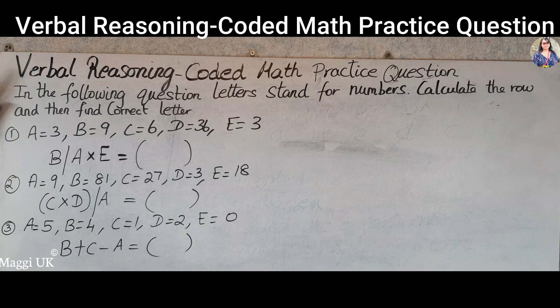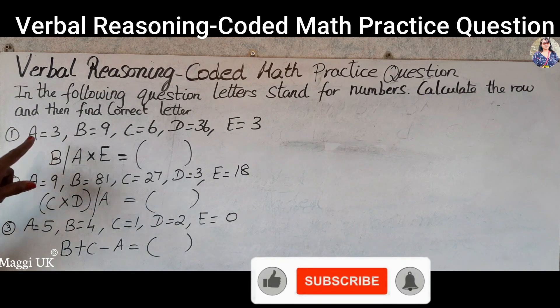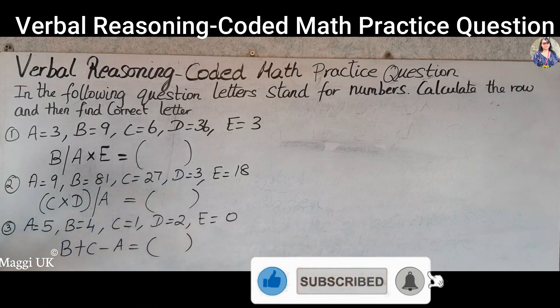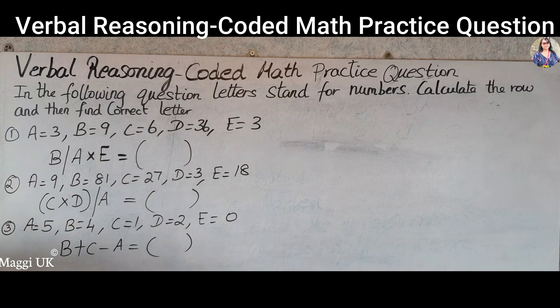This is another topic in verbal reasoning which is coded math practice questions. In the following question, letters stand for numbers. They have given letters with the numbers. Calculate the row and then find the correct letter. So we need to calculate this by a given equation. Once you've got the number, we need to come back to find the correct letter for it.